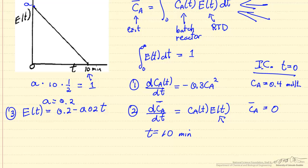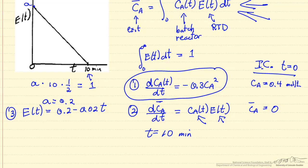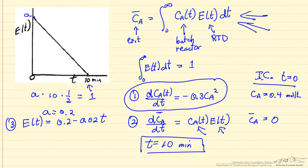We have our initial conditions, two differential equations, and the equation for E(t) to substitute in and solve. We could also analytically solve this by solving the batch reactor equation analytically, substituting in the concentration and E(t), and then separating variables — but numerically it is very easy to solve. We integrate to 10 minutes, and using the segregated flow model we determine the exit concentration for this residence time distribution.